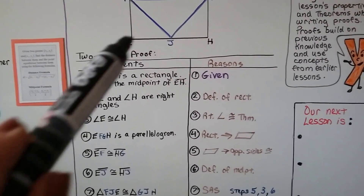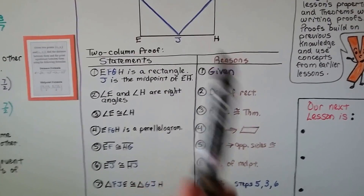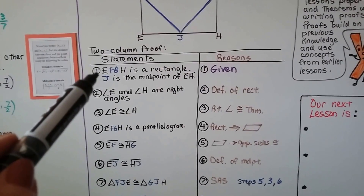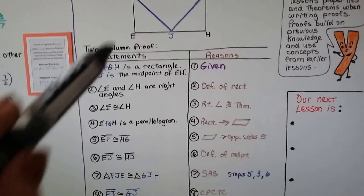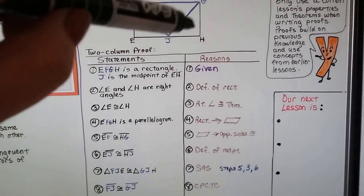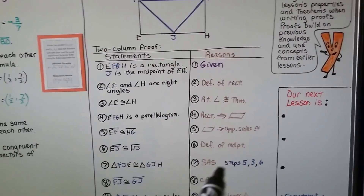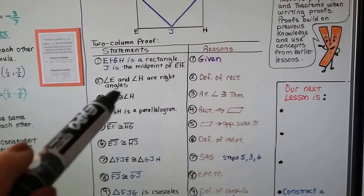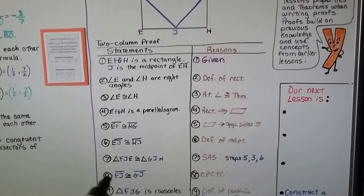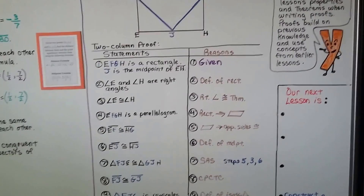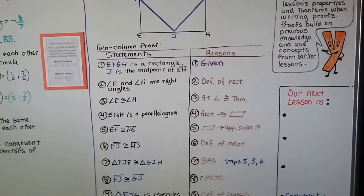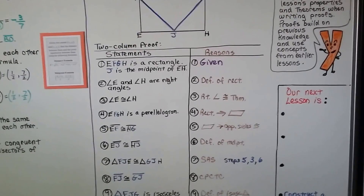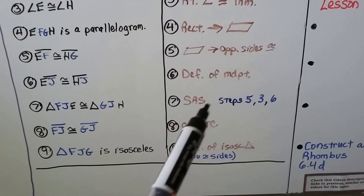Statement six: segment EJ is congruent to segment HJ — that's the definition of a midpoint, since the given tells us J is the midpoint. Statement seven: triangle FJE is congruent to triangle GJH by side-angle-side — side from step five, angle from step three, and side from step six. Statement eight: segment FJ is congruent to segment GJ because of CPCTC — congruent parts of congruent triangles are congruent. Statement nine: triangle FJG is isosceles by the definition of an isosceles triangle, which requires two congruent sides, and we've shown that.